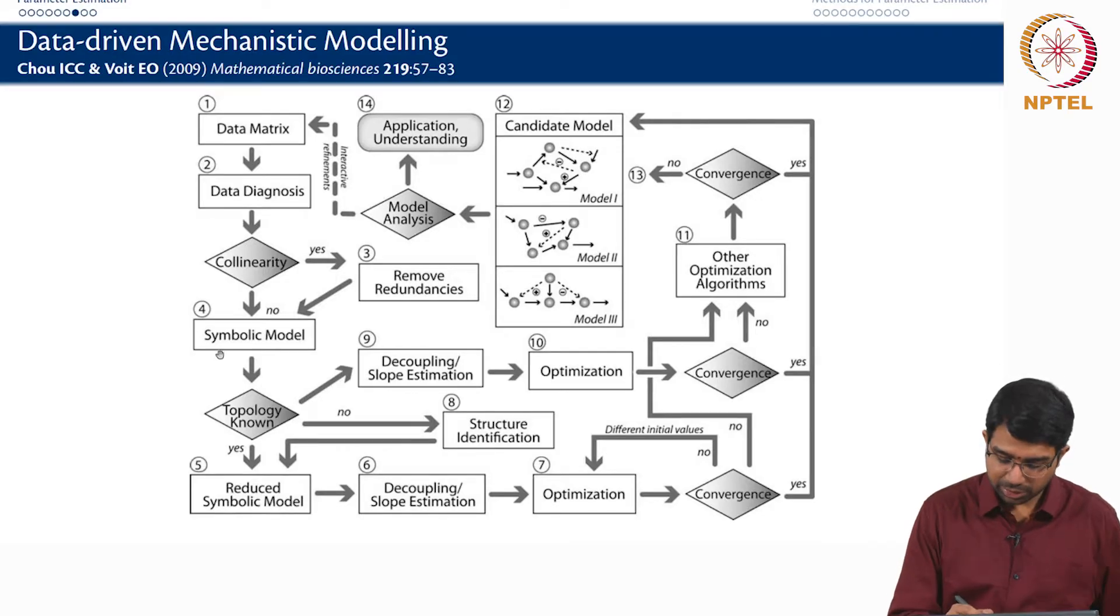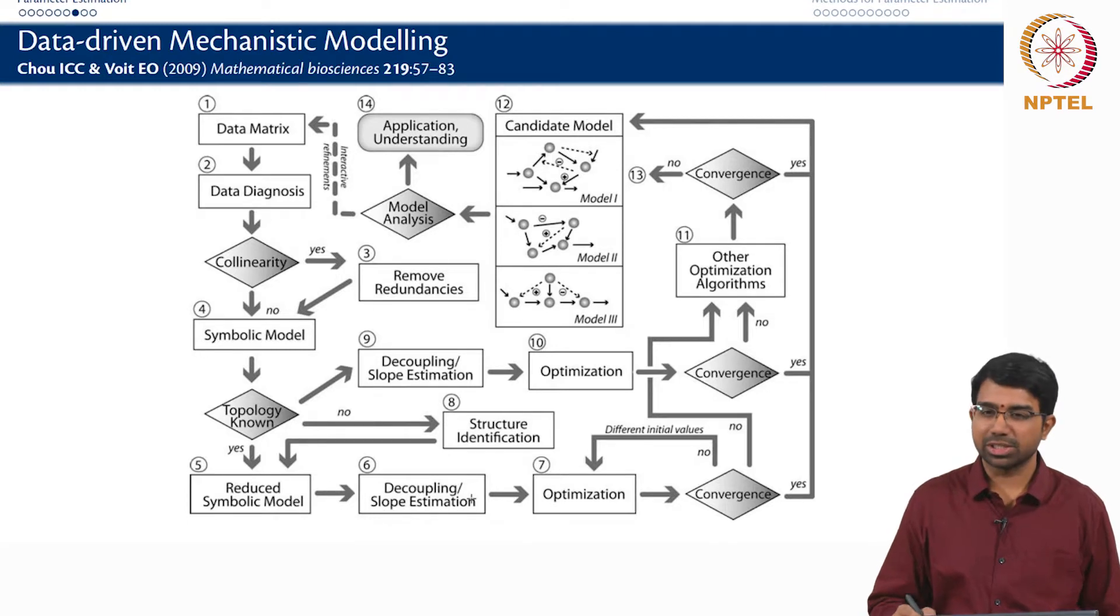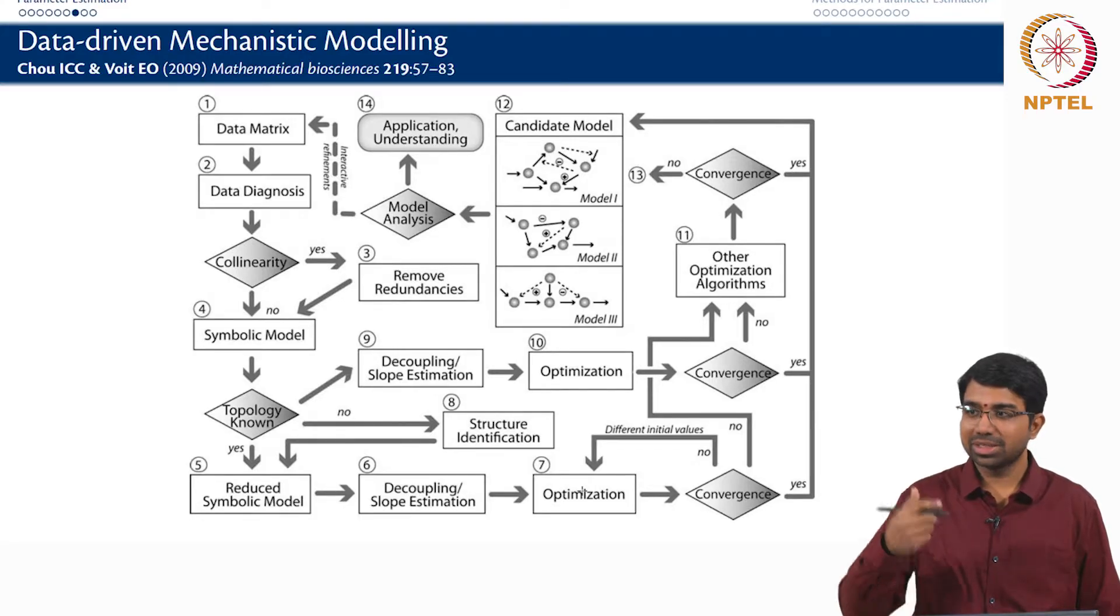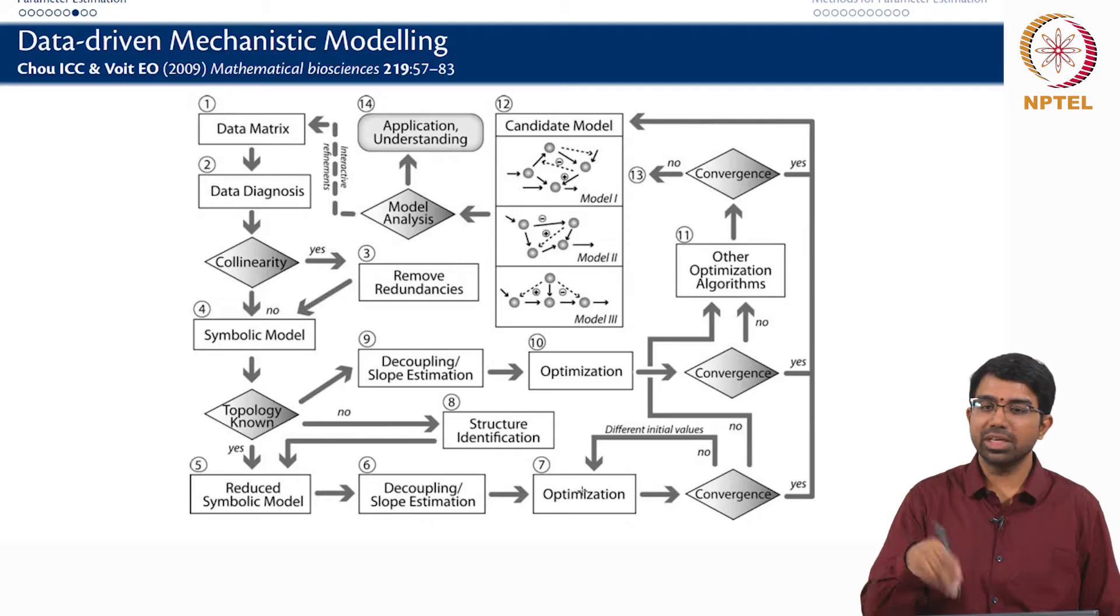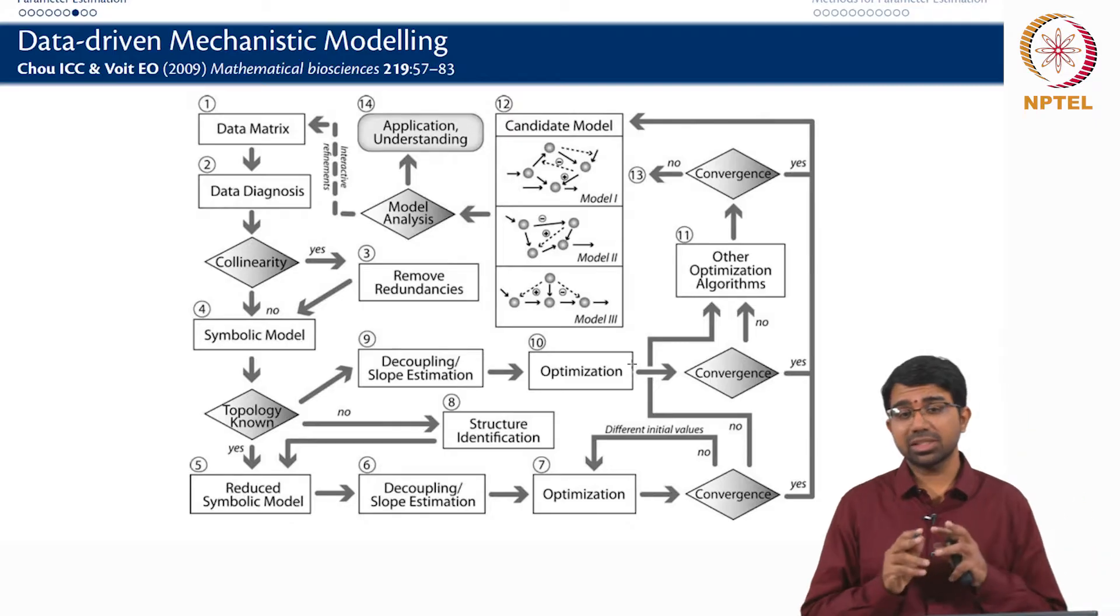So then you have a model. Do you know the topology? Then you try to reduce the model. See if there is anything that can be decoupled. Slope estimation is another method to speed up parameter estimation. But basically let us just assume points 4, 5, 6 as the normal modeling exercise that we do. And then optimization. Are you able to fit the data by sticking your parameter set into the model? Does your parameter set help you regenerate the original data? Convergence, great. Then you have a candidate model. If no, you have to fiddle around. Maybe there are issues. This is the place where it gets tricky.